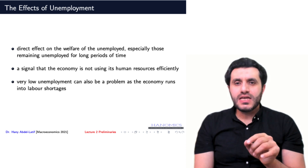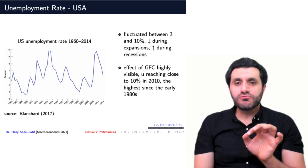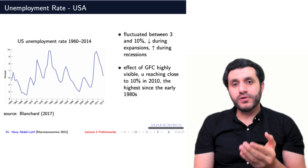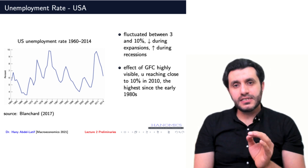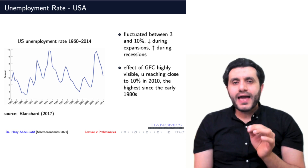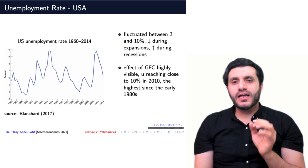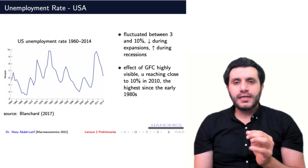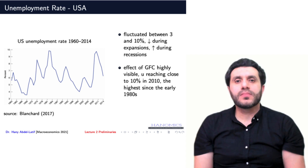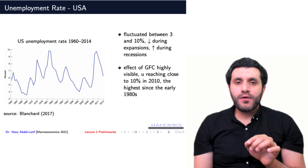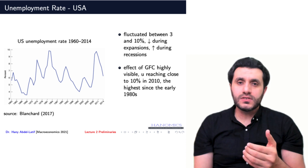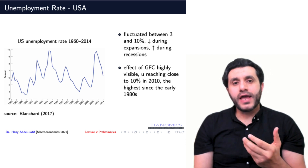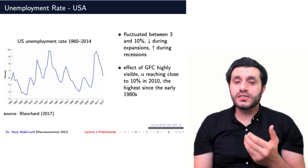Let's now see an example of unemployment using real data. This graph shows the unemployment rate in the US from 1960 to 2014. Notice how the unemployment rate fluctuates between around 3% during good times or expansions and 10% during recessions. You can also see how the effect of the global financial crisis on unemployment is noticeable, where the unemployment rate reached 10% in 2010, the highest since the early 1980s.